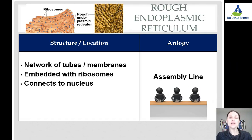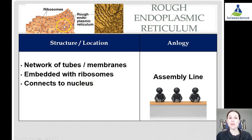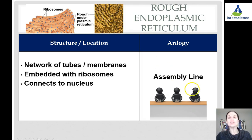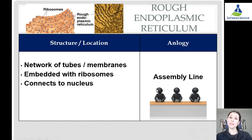The rough endoplasmic reticulum is a network of tubules connected to the nucleus. It's rough because it is embedded with ribosomes. You can see in the image — and in the actual microscope image — all the little ribosomes embedded, giving it that rough look. Our analogy is that it's like an assembly line: things are being made, and the workers on the assembly line are like the ribosomes.